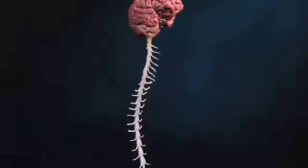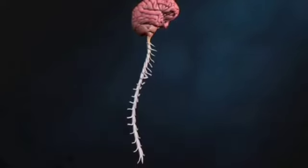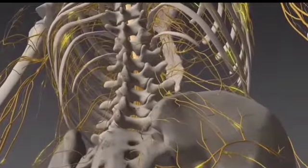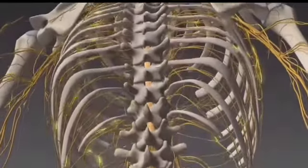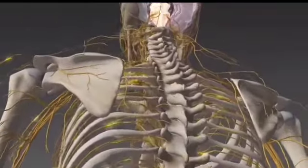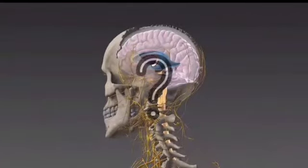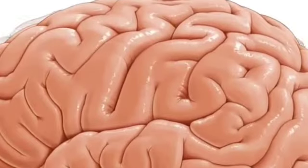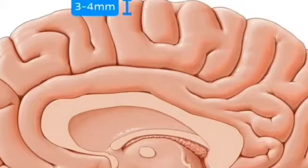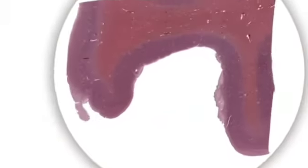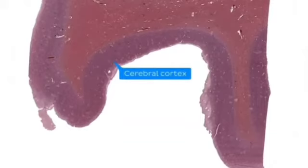The sensory information has come to the central nervous system. When it goes to a specific part, you will be conscious of that information. But if it does not reach that specific part, you will not be aware of it. That specific part is the cerebral cortex. This is the cerebral cortex, which is concerned with consciousness — whatever information comes to it is taken to the consciousness level.